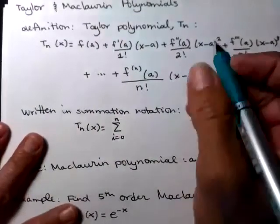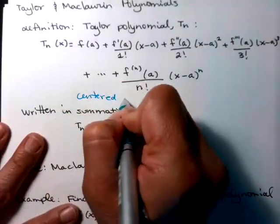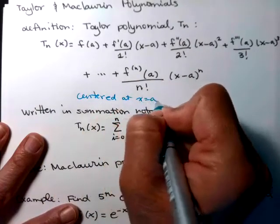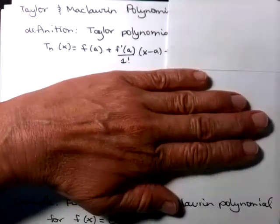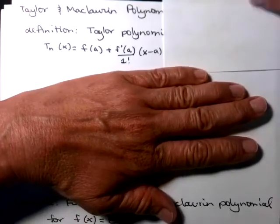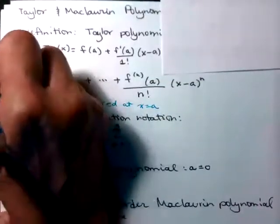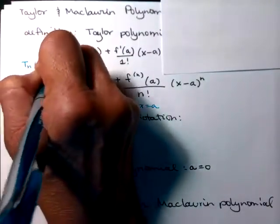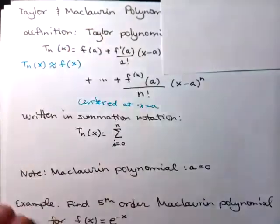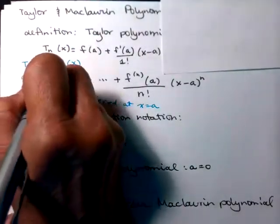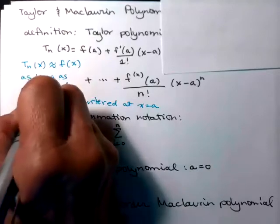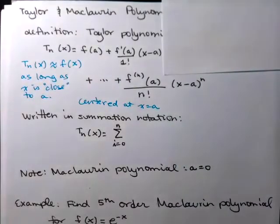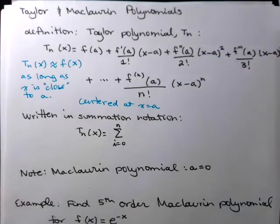So this is a Taylor polynomial, and the words we use are centered at x equals a. And if you remember what the linearization, what the equation of the tangent line would do is it would approximate your function. So t sub n of x is approximately the same as f(x), as long as x is close, and close is relative, to a. You can use this Taylor polynomial as a representation of f(x), as long as you're close to this place that you've developed it around.